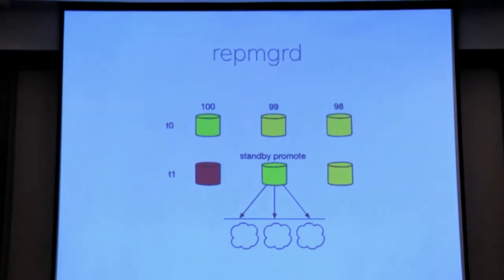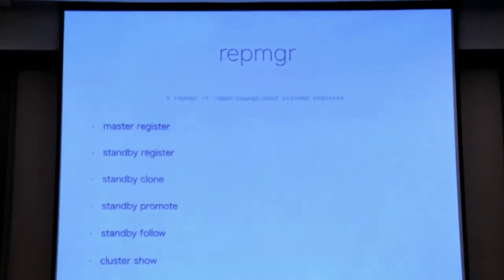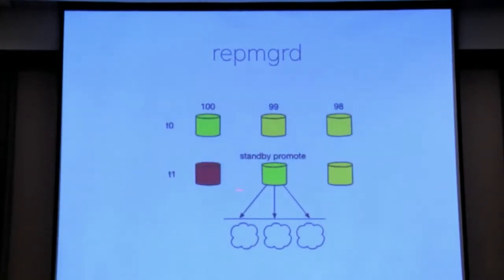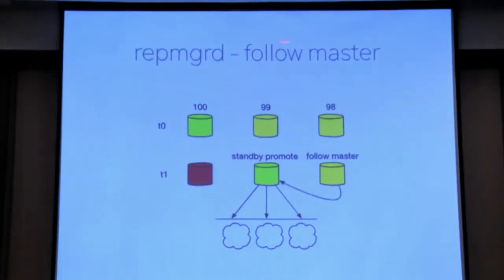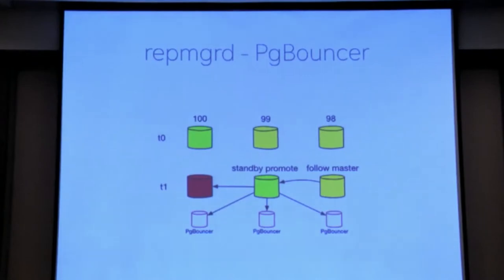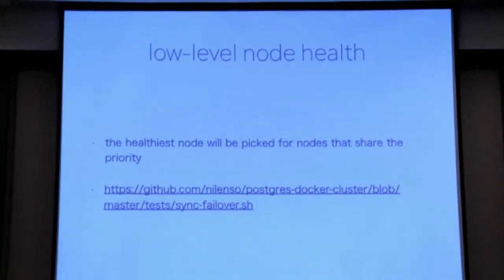If you have a master-standby setup and the master goes down, it gives you hooks — RepManager hooks into commands and gives you hooks to do stuff. When promotion happens, you can do things like tell your app about it. It also gives you a hook for following the new master, so the new standby also starts following it. If you have a PgBouncer setup, it can tell all the PgBouncers to update their configuration files and point to the new master. It also does low-level node health consensus — the healthiest node will be picked based on how far away it is from the master.